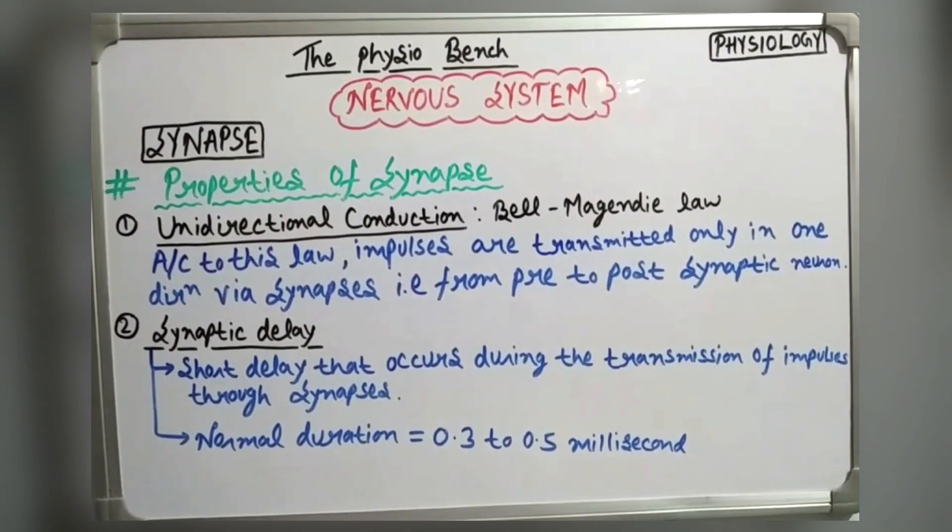Properties of synapse. The first property is unidirectional conduction, which is called Bell-Magendie Law. According to this law, impulses transmit in one direction through synapses. That means from pre-synaptic to post-synaptic neuron.